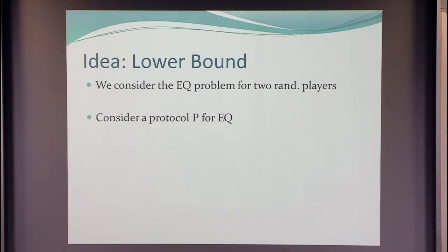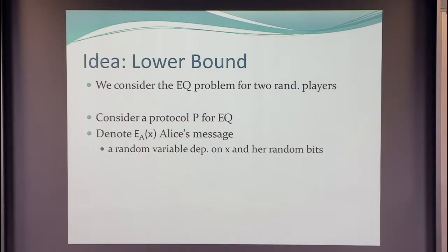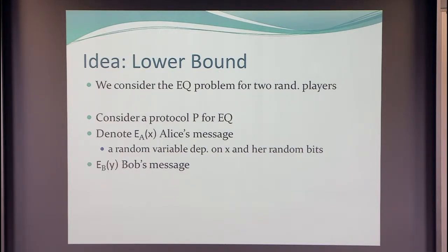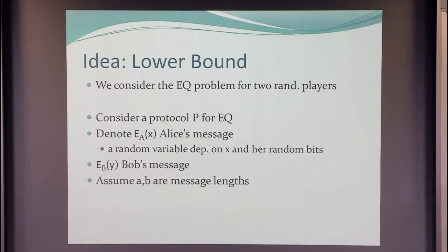The only other proof I know that works directly on the protocol is the original Kalyana-Sundaram-Schnittke proof for disjointness. So we take the protocol P. Inside the protocol there's an encoding function for Alice — she encodes X using some private randomness, so let's denote this random variable E_A(X), that is Alice's message. Similarly for Bob, there's a message E_B(Y). It's not an encoding where you recover the string — it just has to be enough to check equality. We assume that the message lengths are A and B.